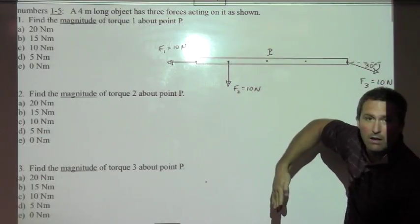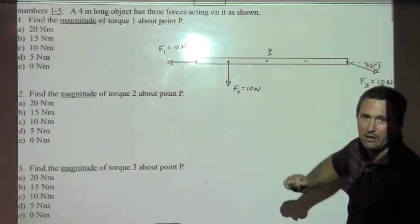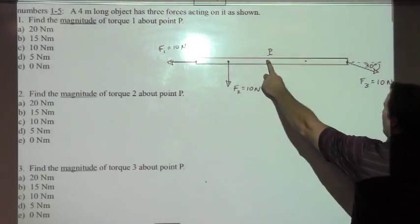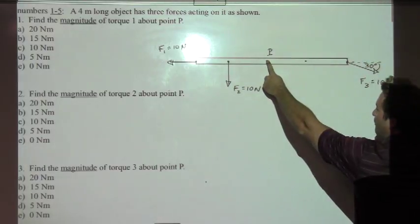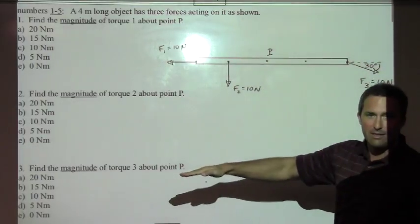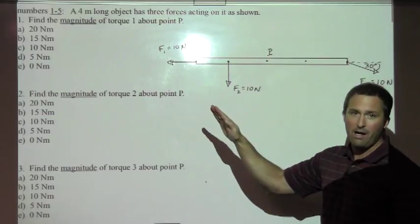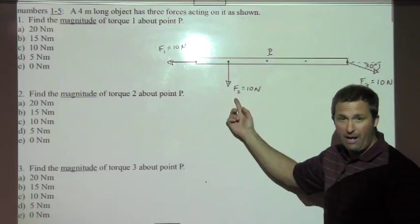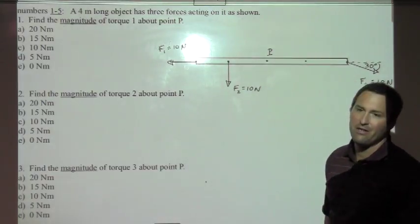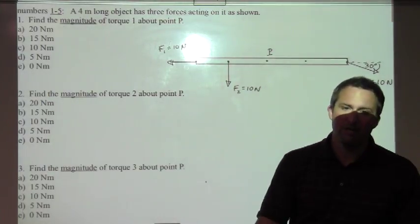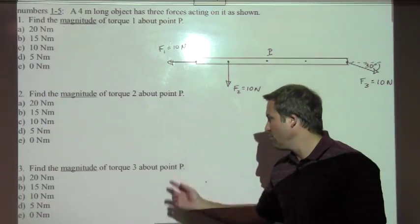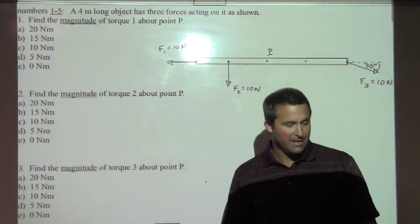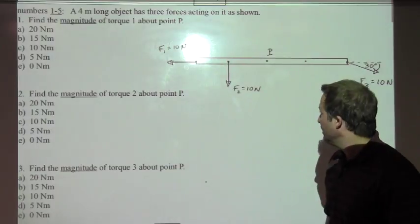And I can see then, that when I hold point P fixed, and imagine pulling on force three arrow, that would tend to make the object rotate clockwise. And so one of these torques is trying to rotate the object counterclockwise about point P, and the other is trying to rotate it clockwise about point P. So in fact, the two ten Newton meter torques add up to zero. The net torque about point P is zero.